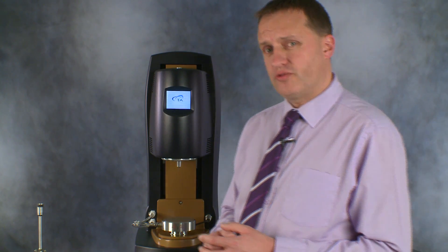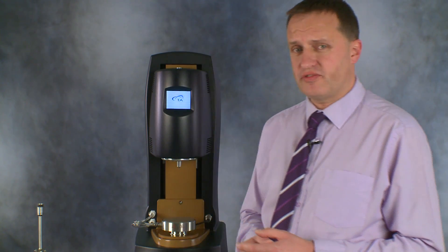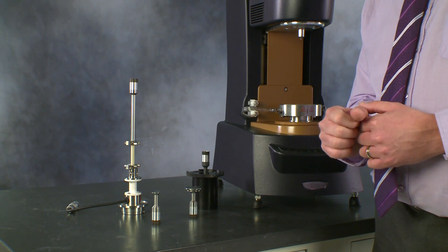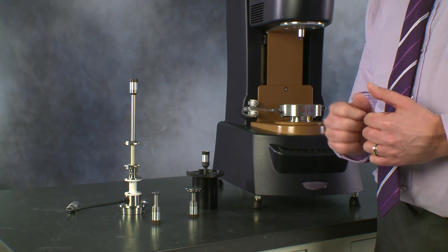To finish off, if you get a sample that's so stiff, then we end up using the torsional clamp system which enables us to measure solid samples and bars over a range of temperatures and transitions.